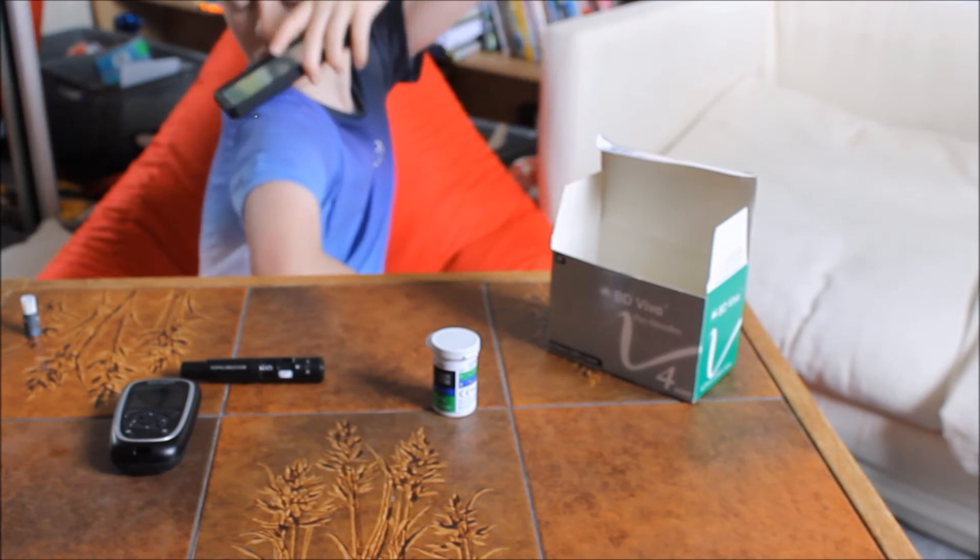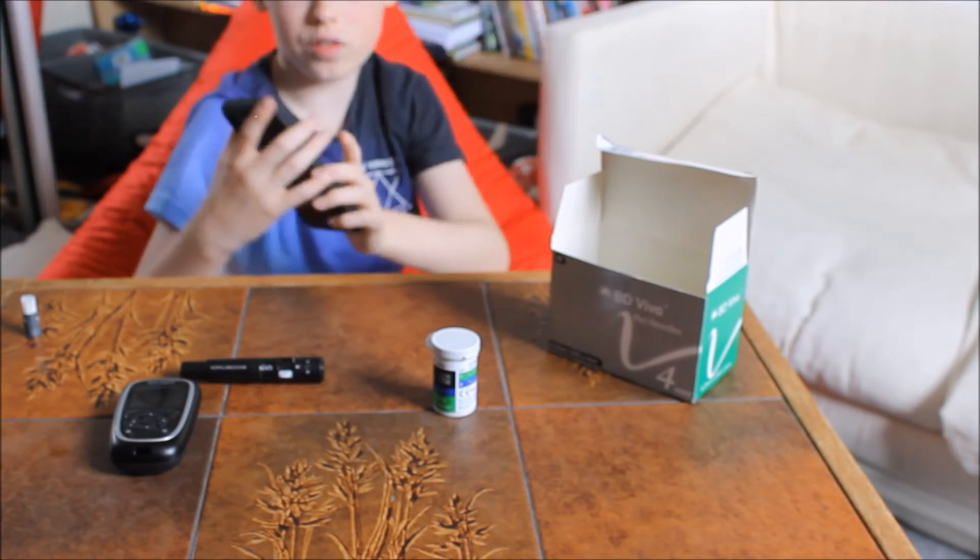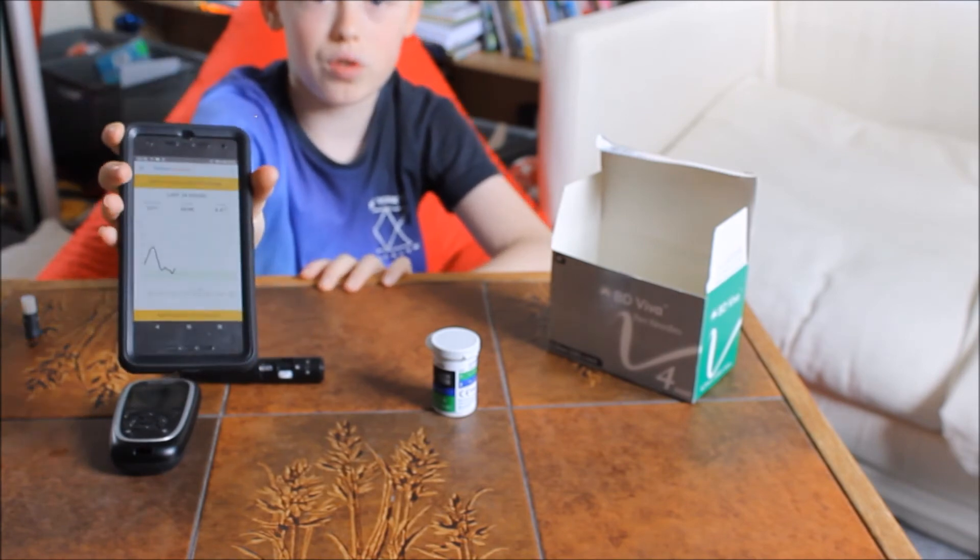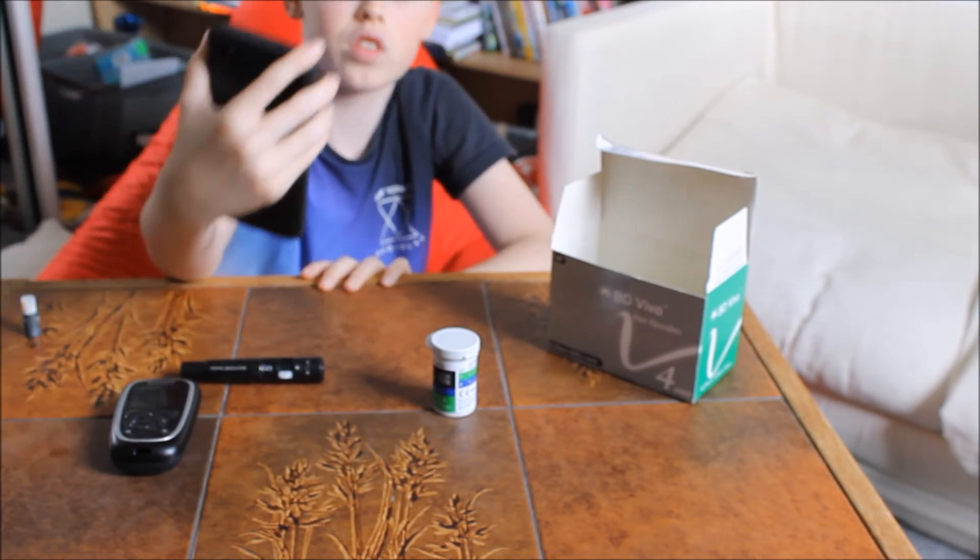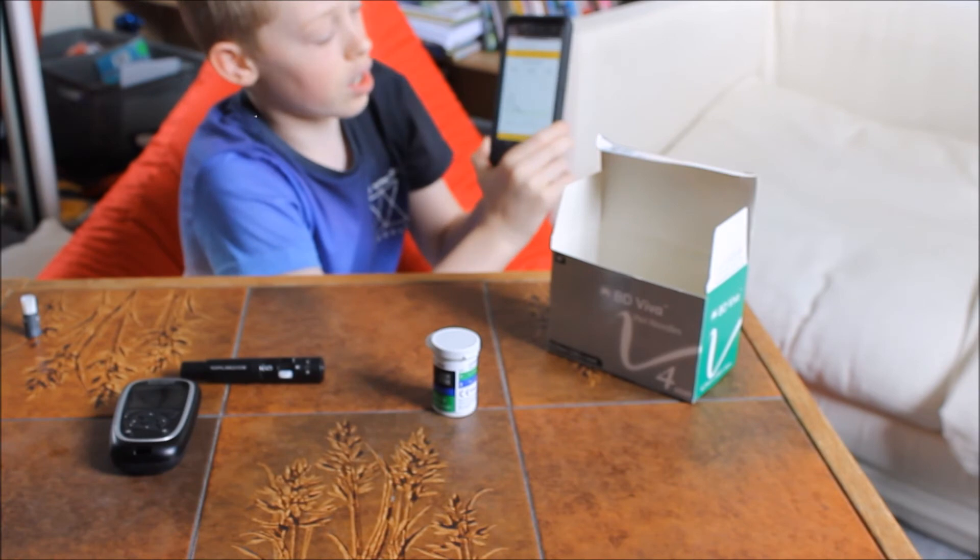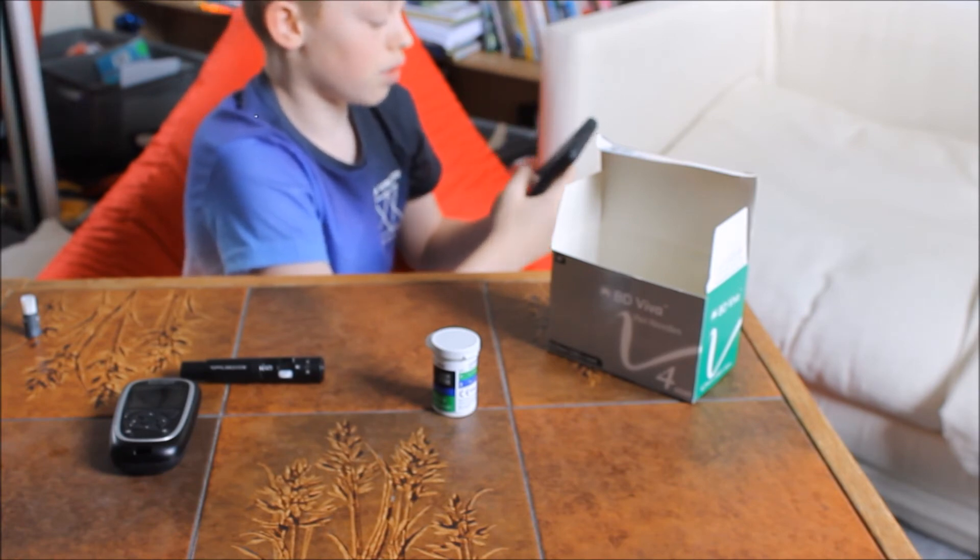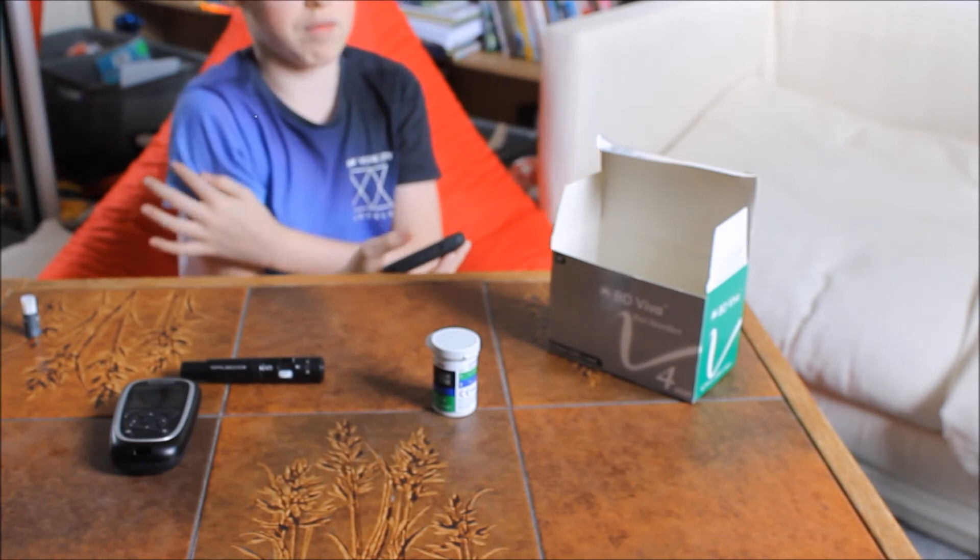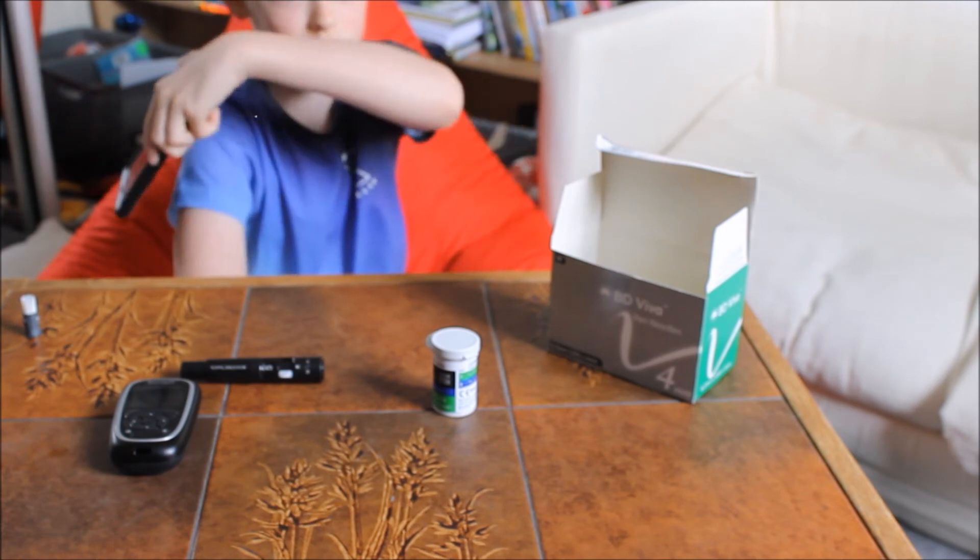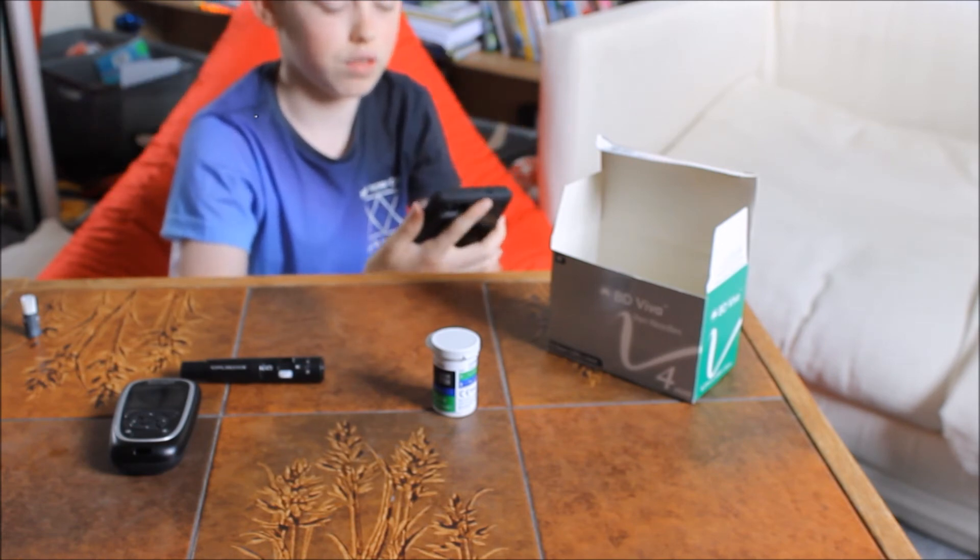Then to do a new sensor, you don't have to press any buttons. You just have to scan the back of your phone on the Libre like that. And now it says Libre can be used in 60 minutes—new sensor starting up. So that's how you use the Libre. In 60 minutes time, if you're going to have a meal, you can just scan and it'll give you your numbers.